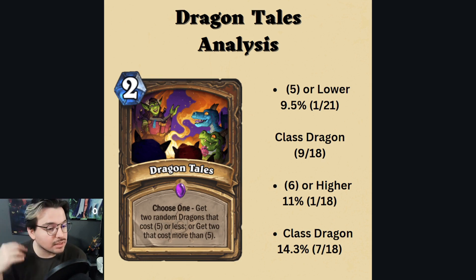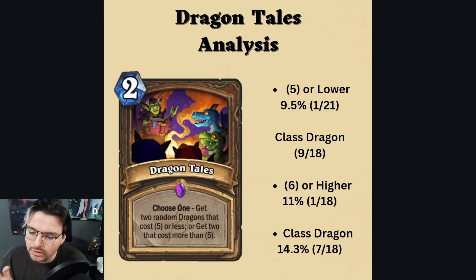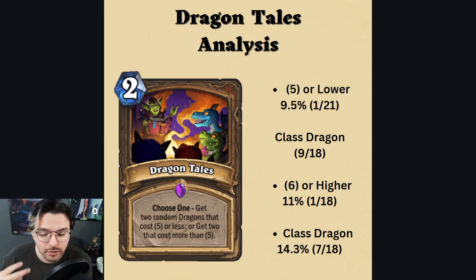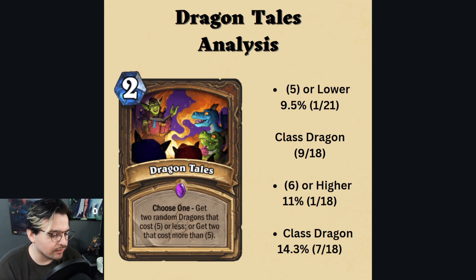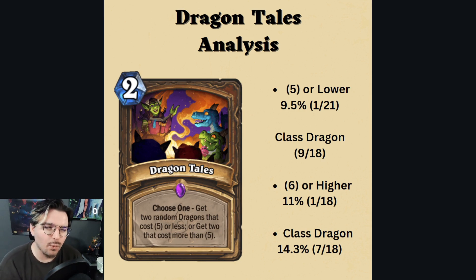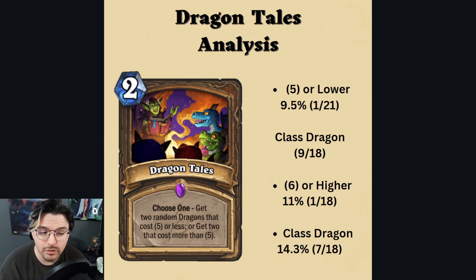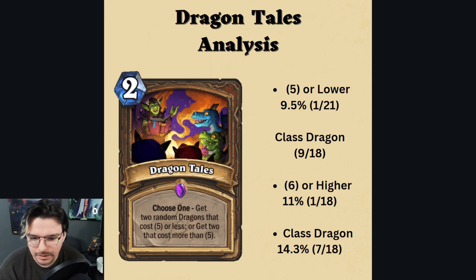Today we're going to be discussing the Dragon Tales druid spell that is choose one: get two random dragons that cost five or less, or get two that cost more than five. The probability of this is rather interesting because with druid, it does have a very limited pool of dragons. I was wondering what it would look like — how consistent this card is, what kind of good cards we'd be getting, whether you choose the lower variation or the higher cost variation.